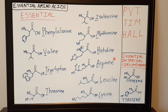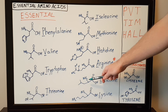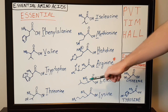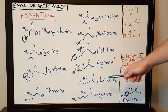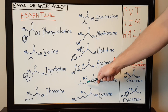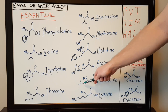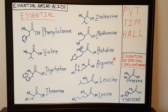The next amino acid is leucine. Leucine is another one of the three branched chain amino acids. It is similar to isoleucine and also related to valine, except it has an extra group or an extra carbon attached to it.